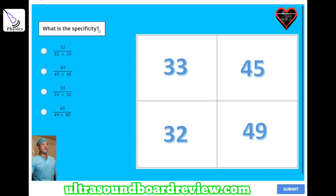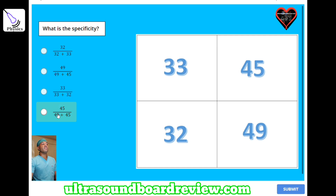What is the specificity? A) 32 divided by 32 plus 33, B) 49 divided by 49 plus 45, C) 33 divided by 33 plus 32, or D) 45 divided by 49 plus 45? The answer is B, 49 divided by 49 plus 45.